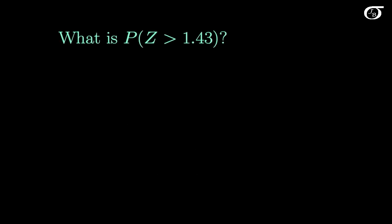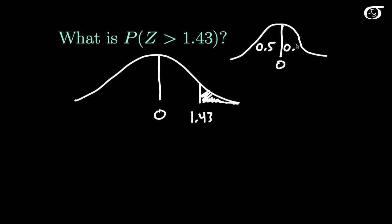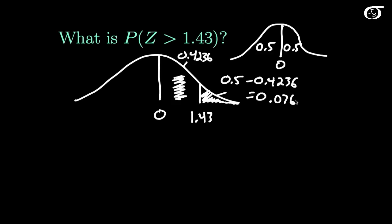Now suppose we want the probability that z is greater than 1.43. We draw our picture: here's 0, and here's 1.43. We want the area to the right of 1.43. The standard normal distribution is symmetric about 0, so 0.5 of the area is to the right of 0. We just found the area between 0 and 1.43 is 0.4236, so the area to the right of 1.43 is 0.5 minus 0.4236, which equals 0.0764.